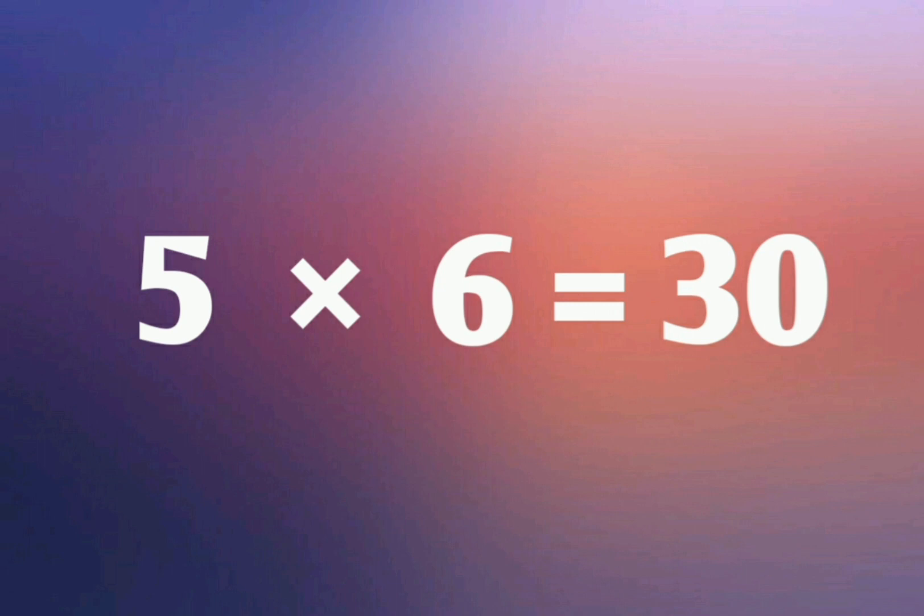5 sixes are 30. 5 sixes are 30. 5 sevens are 35. 5 sevens are 35. 5 eights are 40. 5 eights are 40.